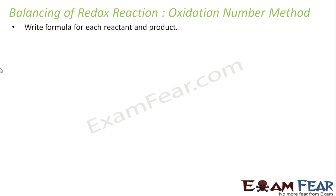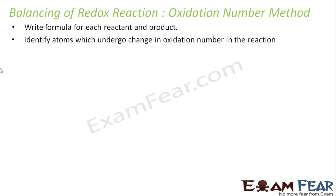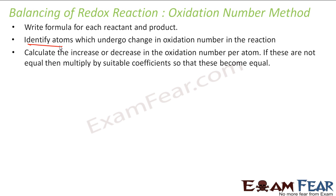Oxidation number method. The first step is to write the formula of reactants and products. The second step is to identify atoms which undergo oxidation number change. Then we find the change in oxidation number per atom, and balance the change by multiplying with sufficient coefficients.